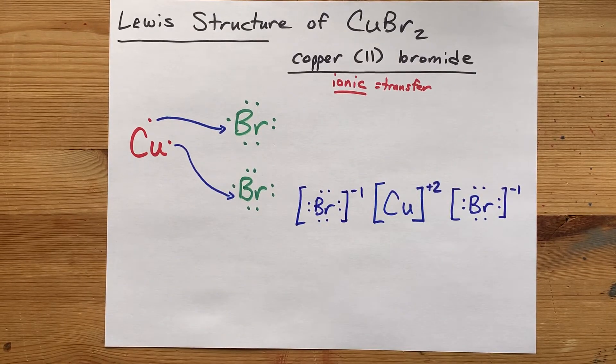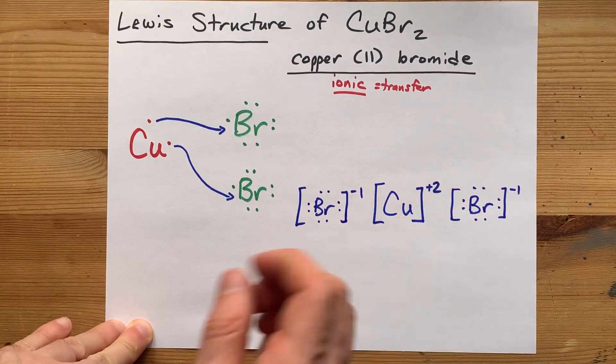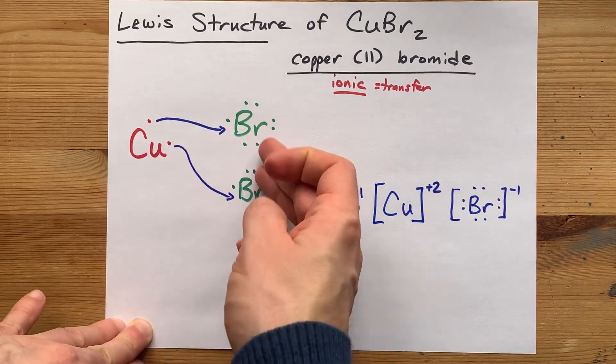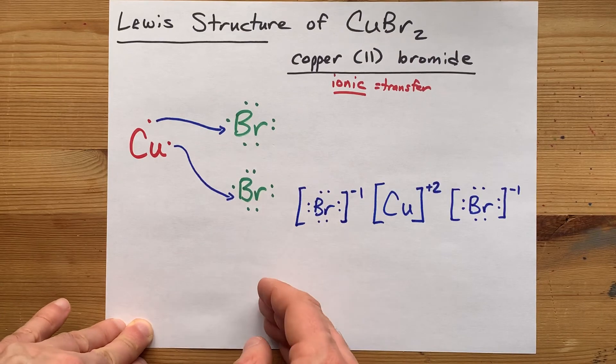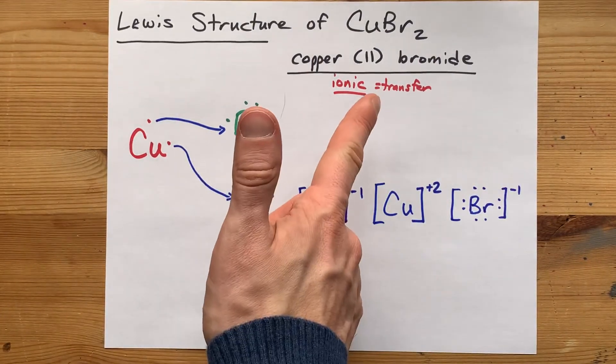But that's not too bad, not too cumbersome. This here is the completed Lewis structure for copper(II) bromide. This is just showing how that transfer happens. Not too bad. Three minutes and change. Best of luck.